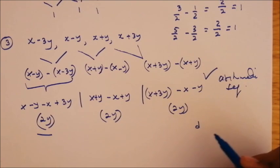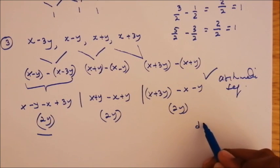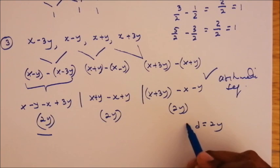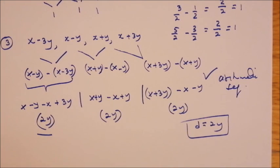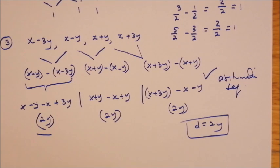We normally write that difference as d, so here d equals 2y. Thank you for watching. On the next video, we're going to derive a very important formula — the nth term, or general term, of an arithmetic sequence — that you cannot survive without in sequences and series. Stay blessed and enjoy the rest of your day.